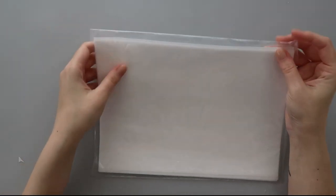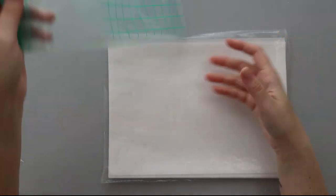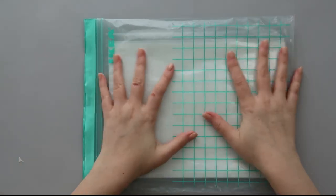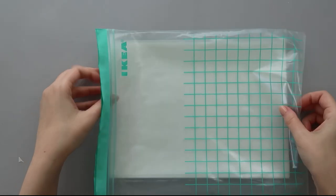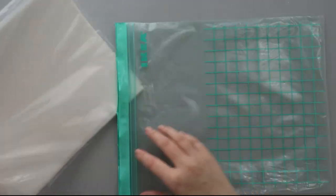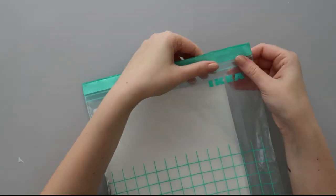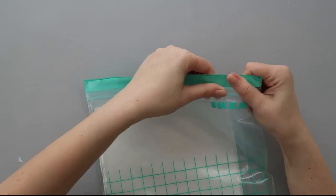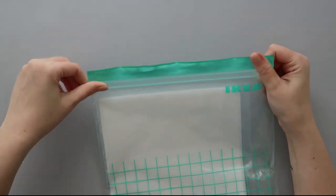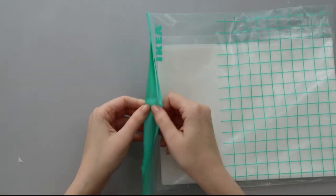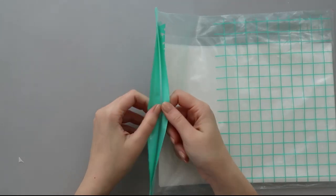So what I do to store my wafer paper first of all you need to find the bag that's the size of your wafer paper or a little bit larger. I use this from Ikea and when I store my wafer paper I'm making sure that I seal my bag tight so you can see there is no air coming into the bag.